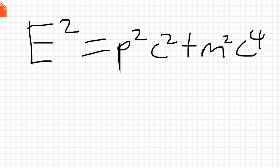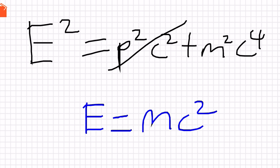When a particle is at rest, just sitting there, then you don't have to account for its momentum anymore, and the equation reduces to its famous form, E equals mc squared.